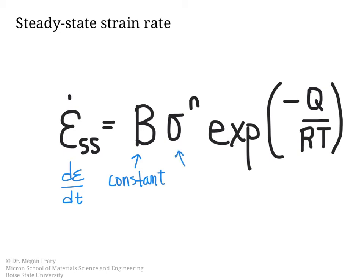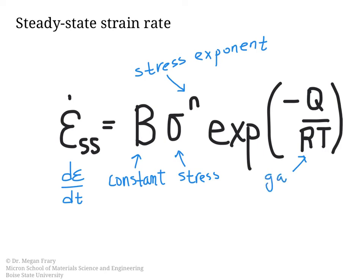Sigma is the applied stress, which is typically held constant during a creep test. N is the stress exponent, and depending on the value of N, that tells us a great deal about the mechanism taking place. R is the gas constant, T is the temperature, and Q is an activation energy whose specific type depends on the mechanism.